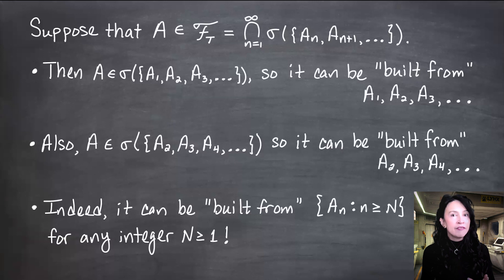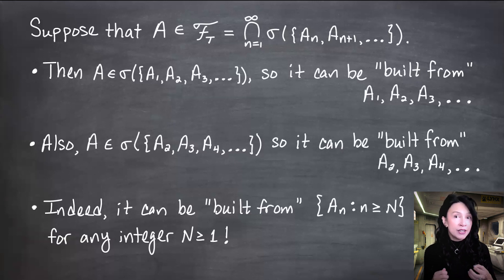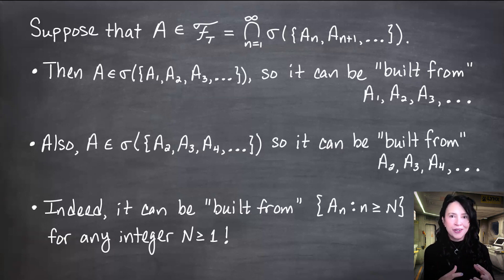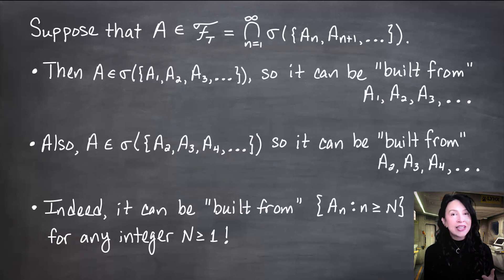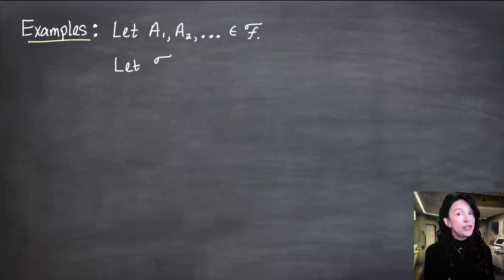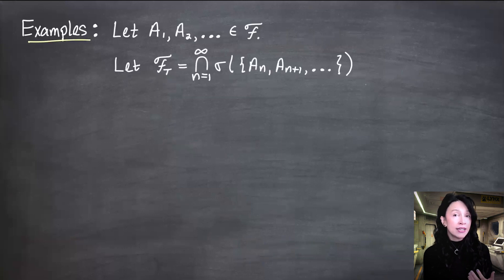Outside the context of measure theory, if you have a limit of a sequence of real numbers, you can drop the first N of them and your limit is not going to change. You can actually drop any finite number. It doesn't have to be from the beginning, because eventually your intersection index is going to pass the highest subscript in your collection of sets you want to drop. Back to measure theory — let's look at some examples. Consider a sequence A1, A2, A3, etc. from the underlying sigma field, and let F sub T be the tail sigma field we just defined.